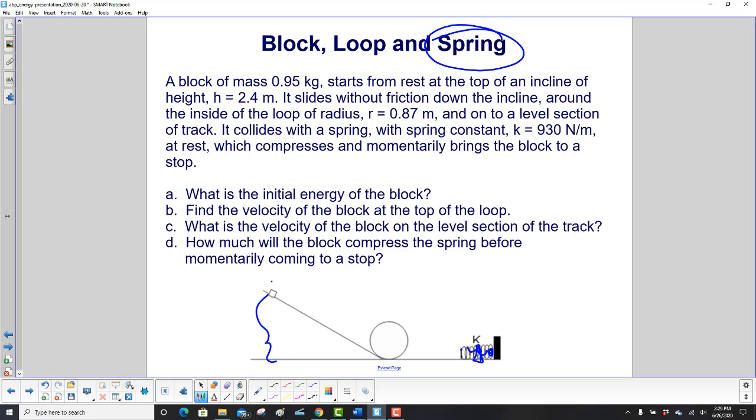And then what happens once it stops? Well, then it shoots the block back out. But at one point here, when it's stopped, that's what we're interested in. So we want to find the initial energy of the block, the velocity of the block at the top of the loop, then the velocity of the block on the level section of track, and how much will the block compress the spring before momentarily coming to a stop.